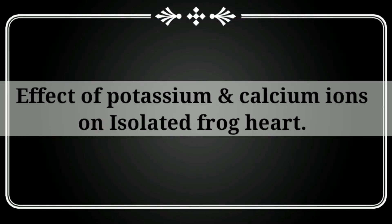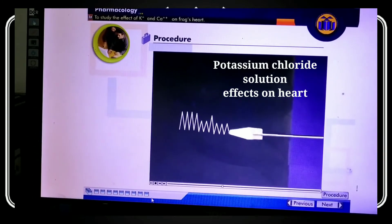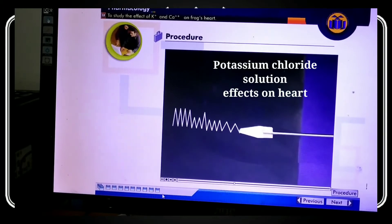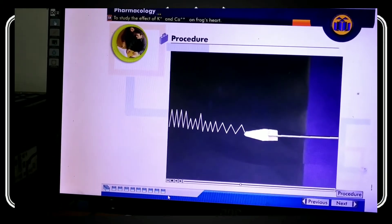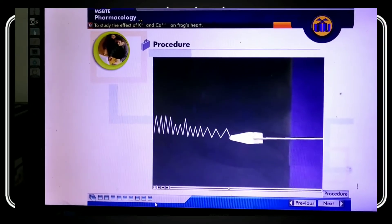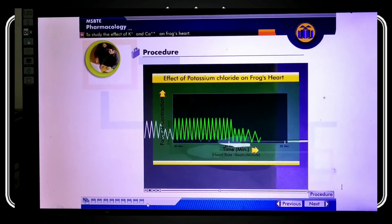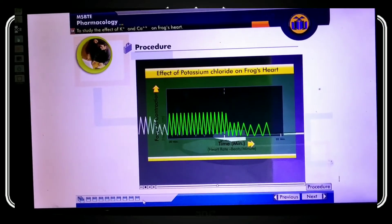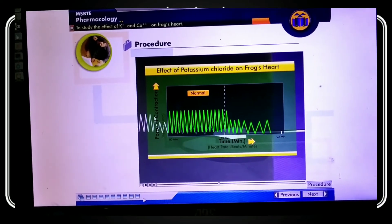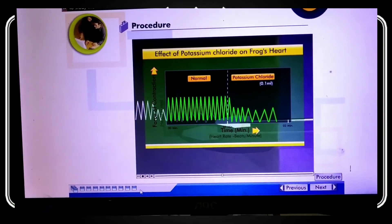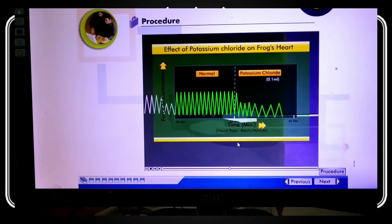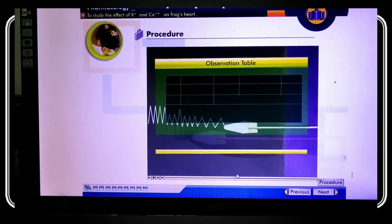After observing the normal graph, we will study the effect of potassium and calcium ions on the isolated frog heart. Potassium ions act on the heart muscle during diastole — the relaxation phase. During this relaxation time, potassium stops the heart because it is unable to contract. You can see potassium chloride 0.1 concentration blocks the heart at diastole.